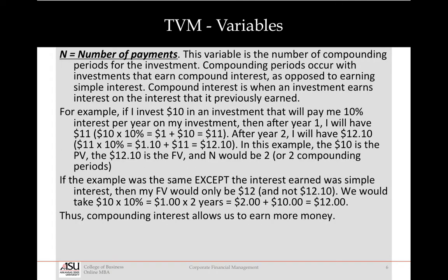N is the number of payments — really the number of compounding periods. A compounding period occurs when investments are in compound interest. So if I invest $10 at 10% per year, after one year I have $11. After two years I have $12.10, because not only do I get another dollar of interest on the $10 initial investment, I also get interest on top of that interest. Compounding interest allows us to earn more money because we're earning interest on top of interest.